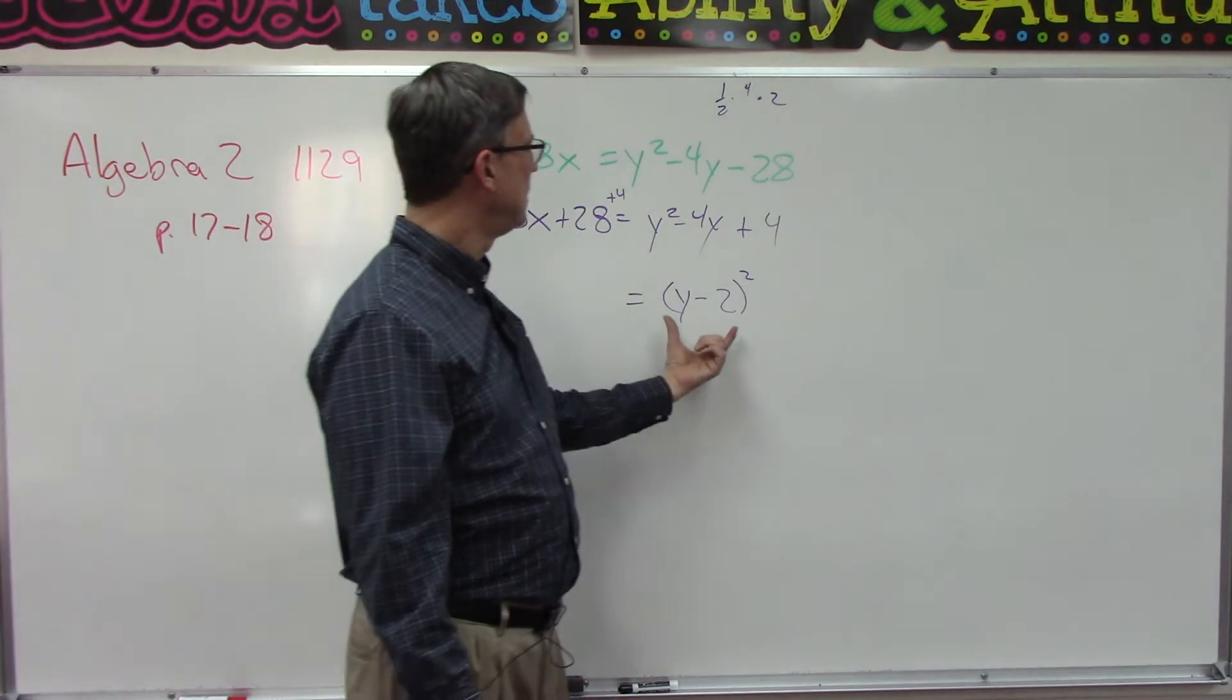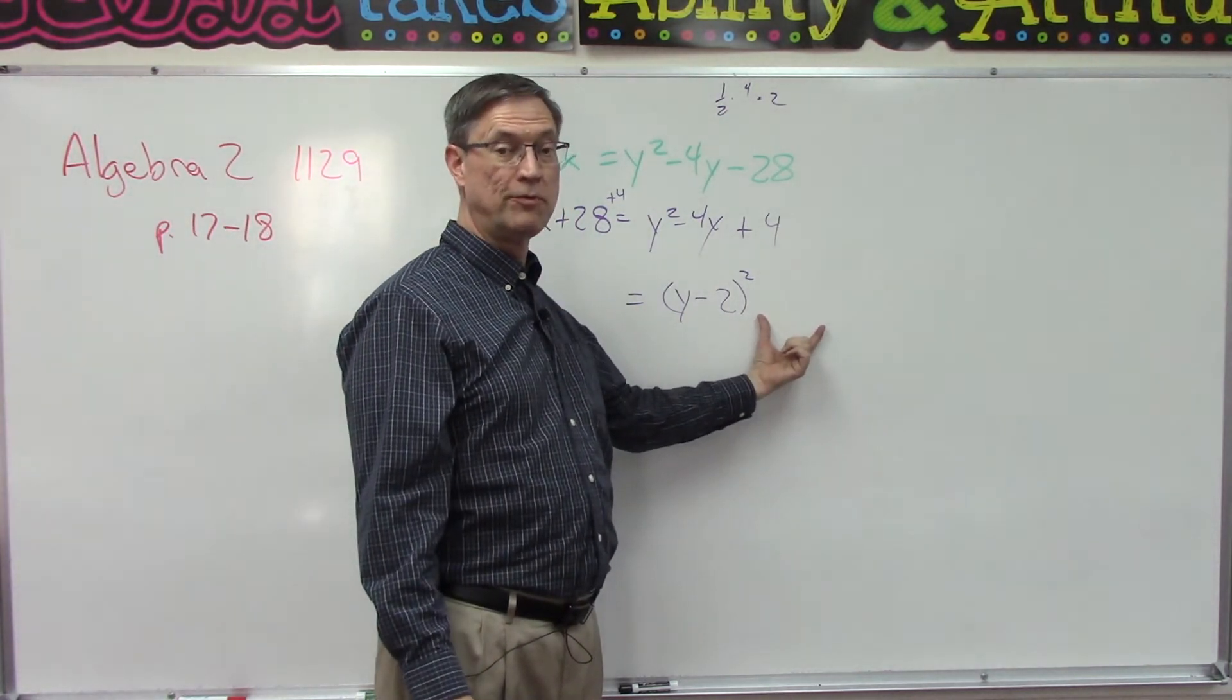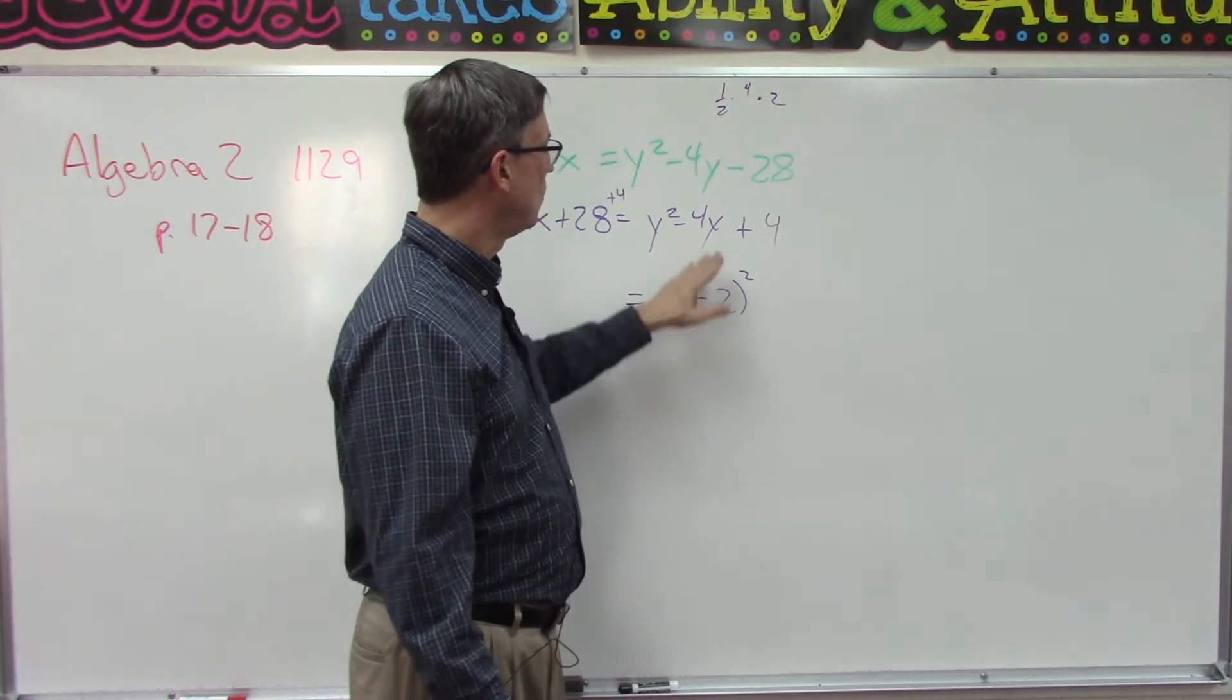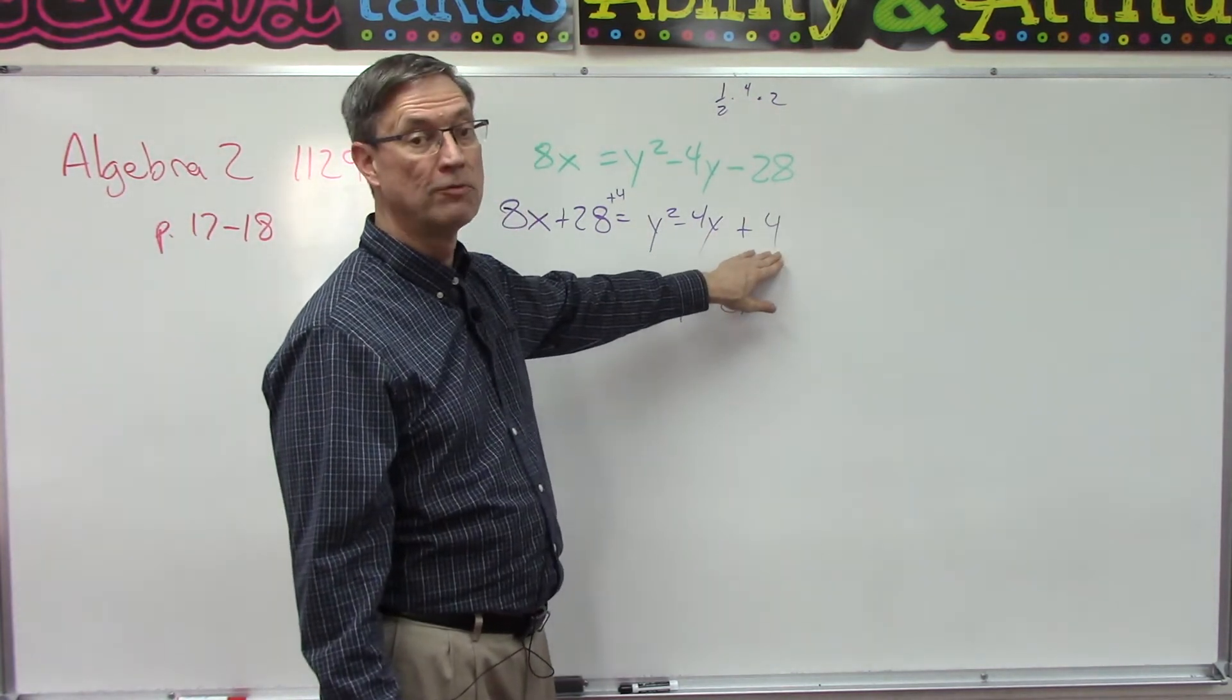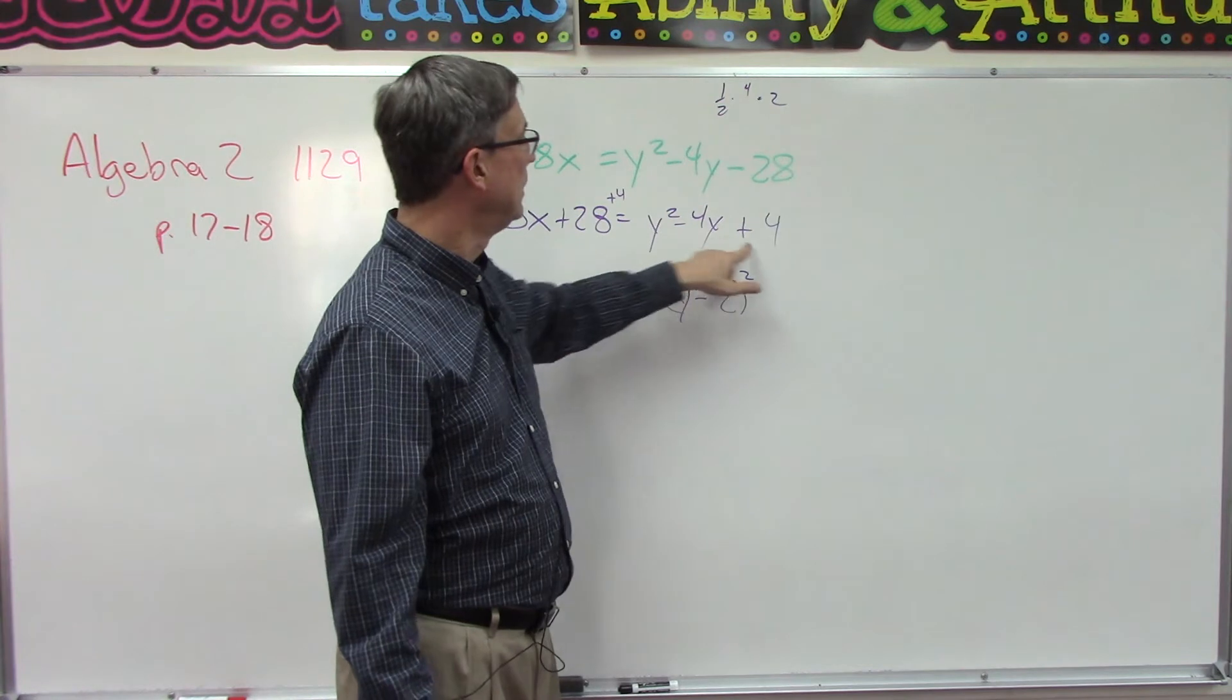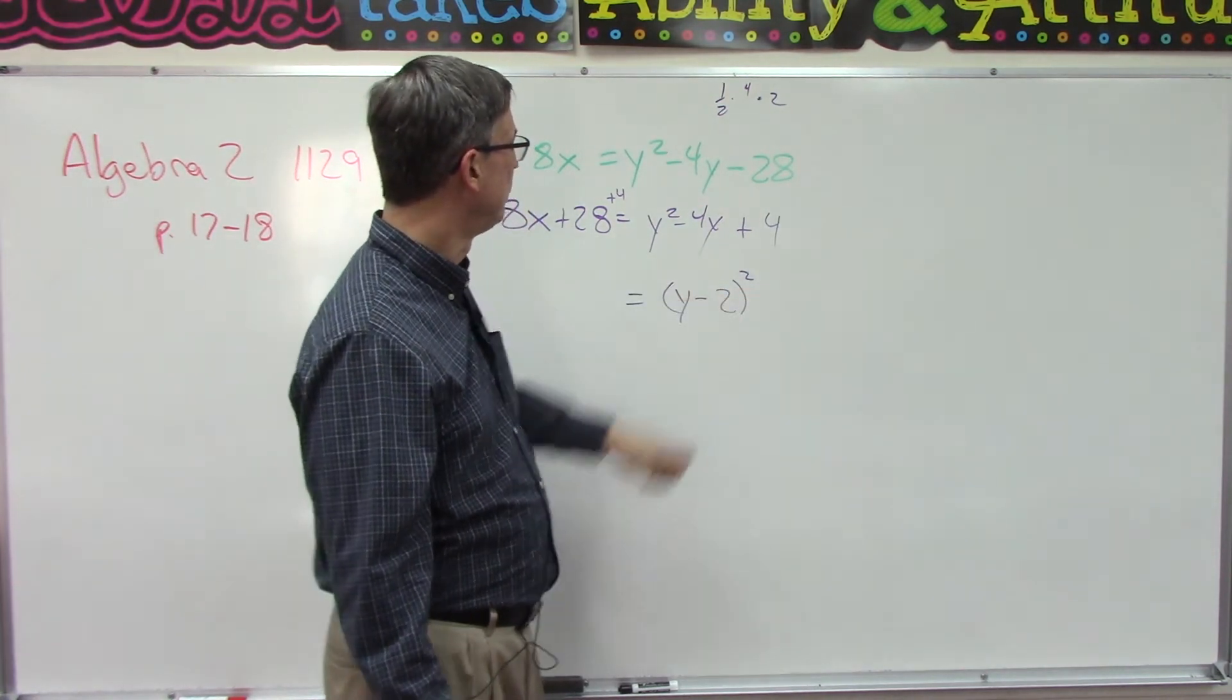what this means. This means that (y - 2) times (y - 2)—if you did the FOIL method, first outer inner last, and multiply them all together—you would get negative 2y and negative 2y, which would give you the negative 4y. Negative 2 times negative 2 would give you the positive 4 here on the end. So this is the whole reason we did this. This is called completing the square. See the squared term here?